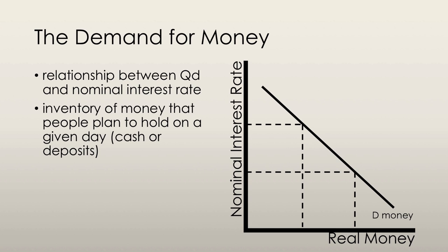The demand for money is the relationship between the quantity of real money demanded and the nominal interest rate. As the nominal interest rate rises, the opportunity cost of holding money increases and thus the quantity demanded decreases.